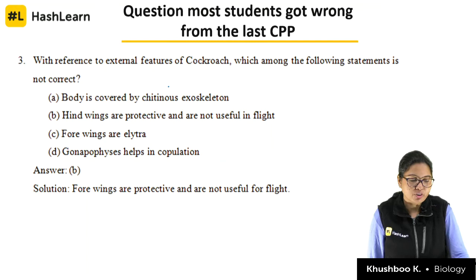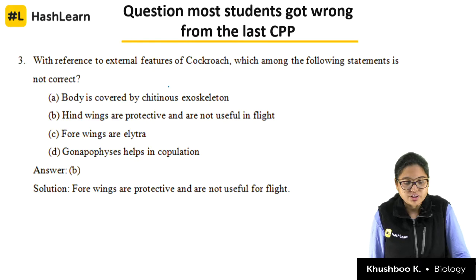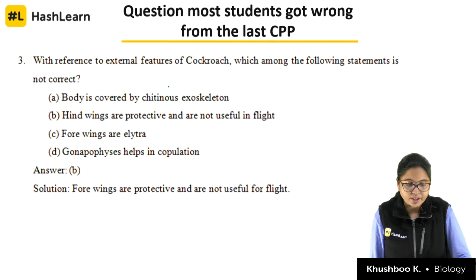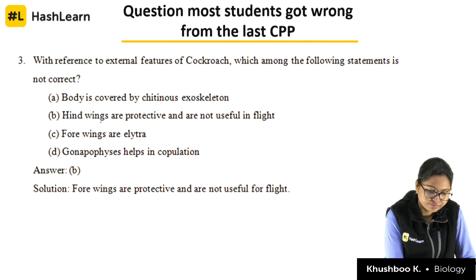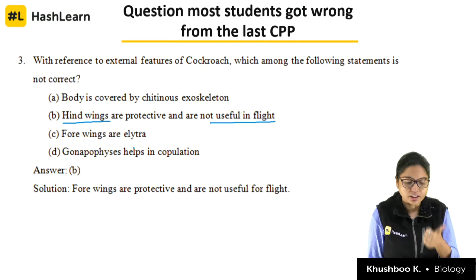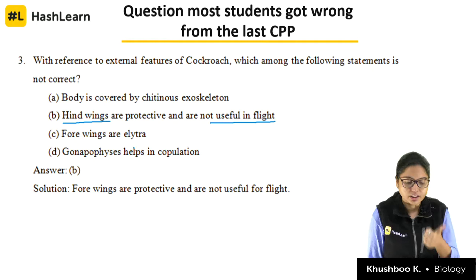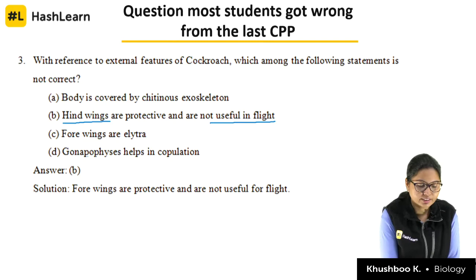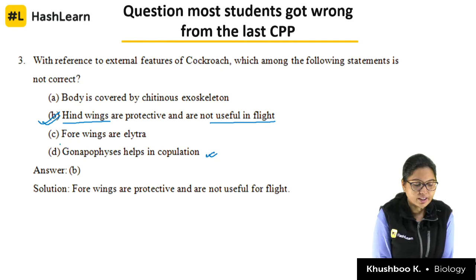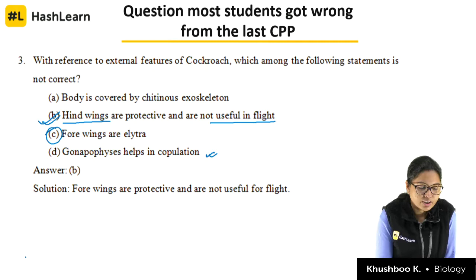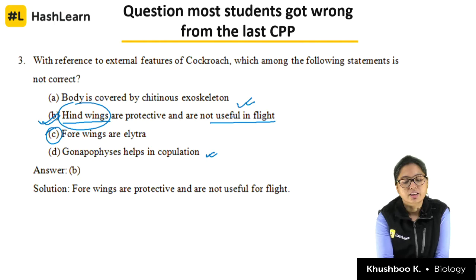Question number 3 of CPP: with reference to the external features of cockroach, which statement is not correct? Body is covered by chitinous exoskeleton — correct. Hind wings are protective and not useful in flight — this is incorrect, because hind wings help in flight. Fore wings are also called elytra — correct. Gonapophysis helps in copulation — correct. So B is the correct answer, but most of you opted for option C.